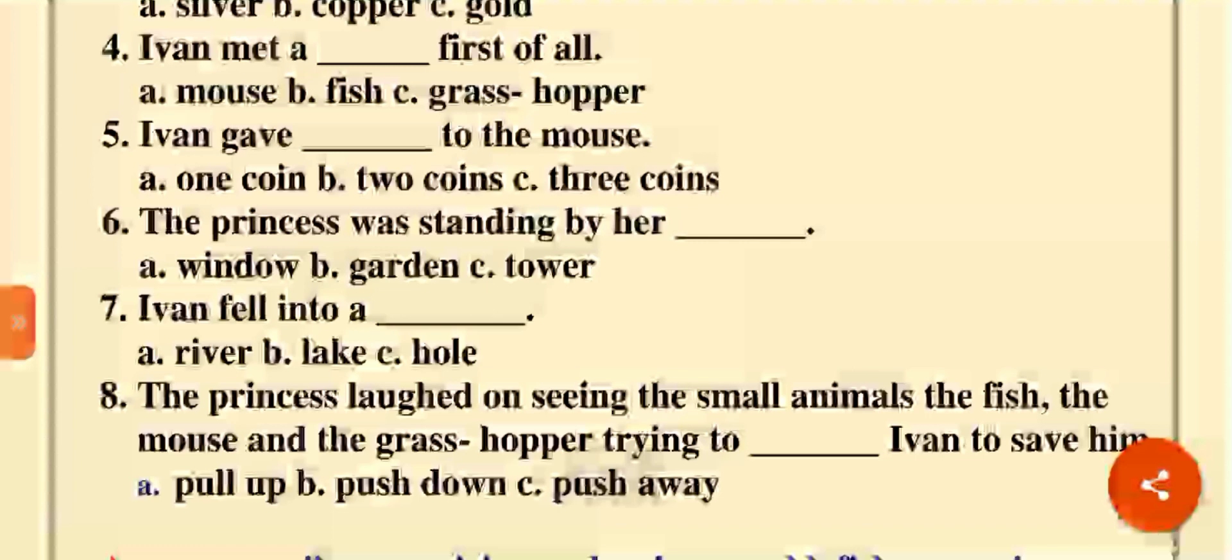Last question. The princess laughed on seeing the small animals, the fish, the mouse, and the grasshopper. Princess was standing by her yes. What did he say? The one man turned on the keys hich rahe si thikay.